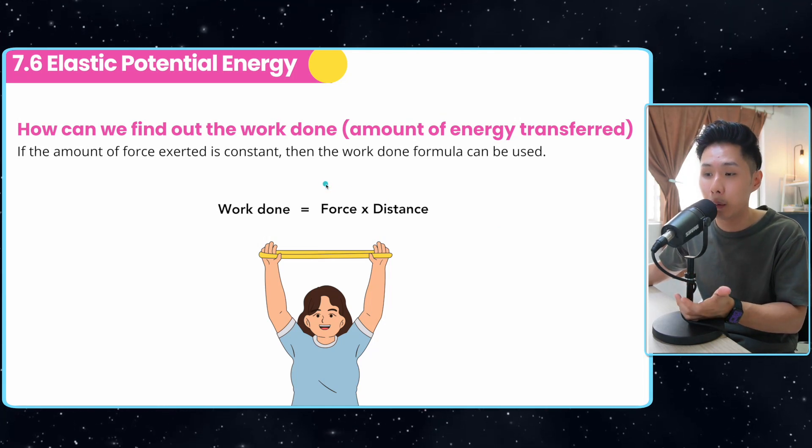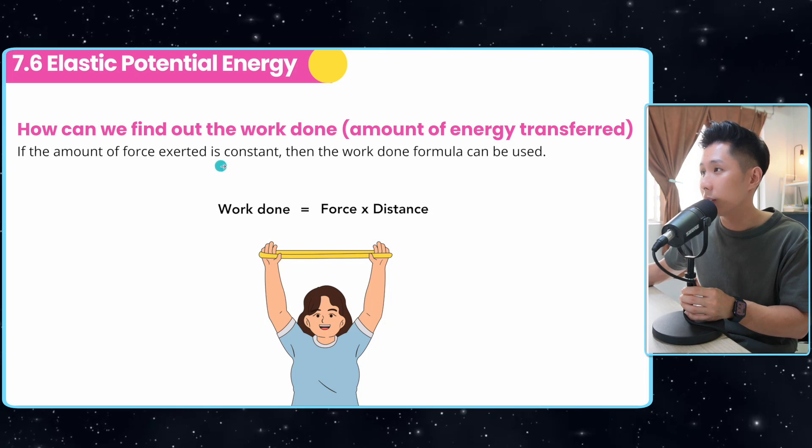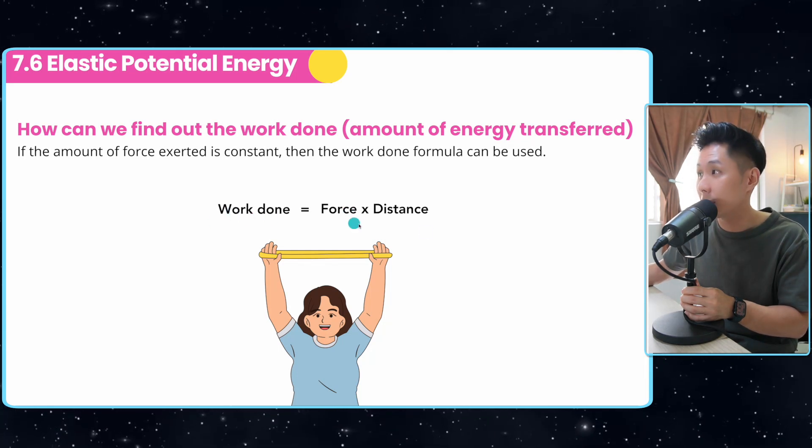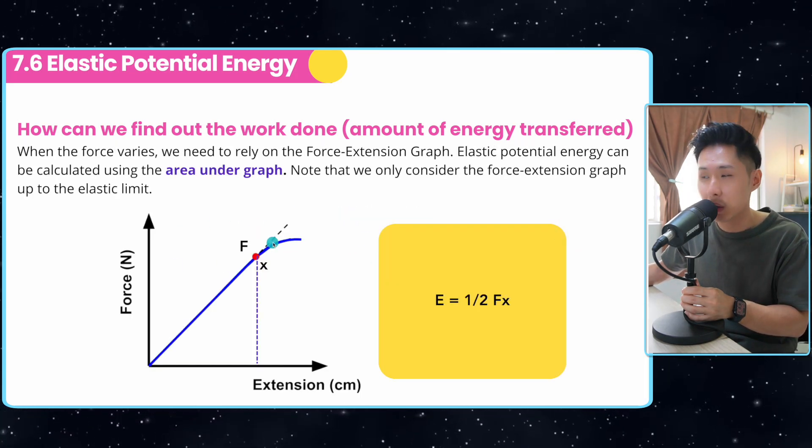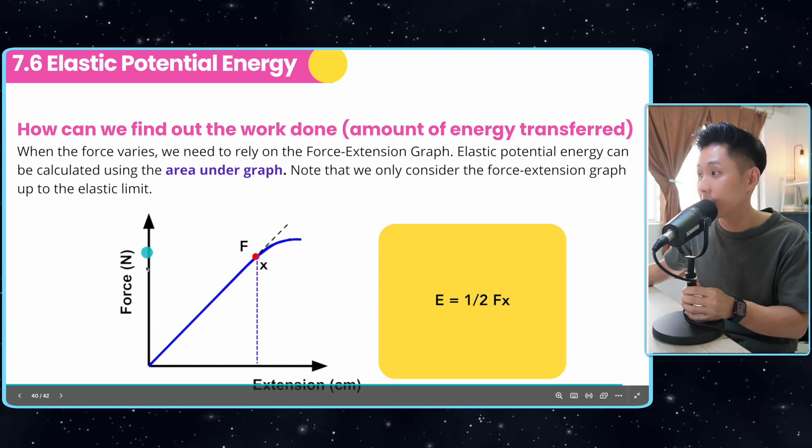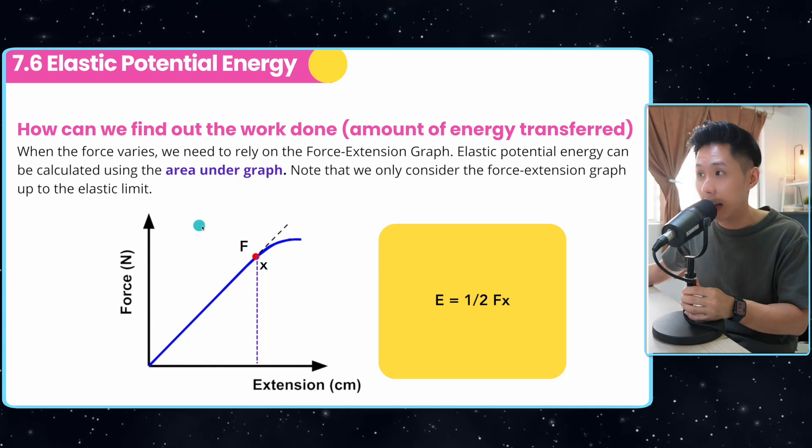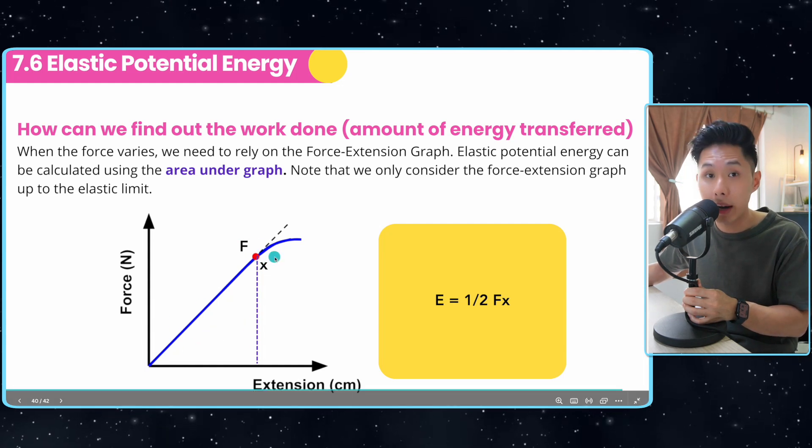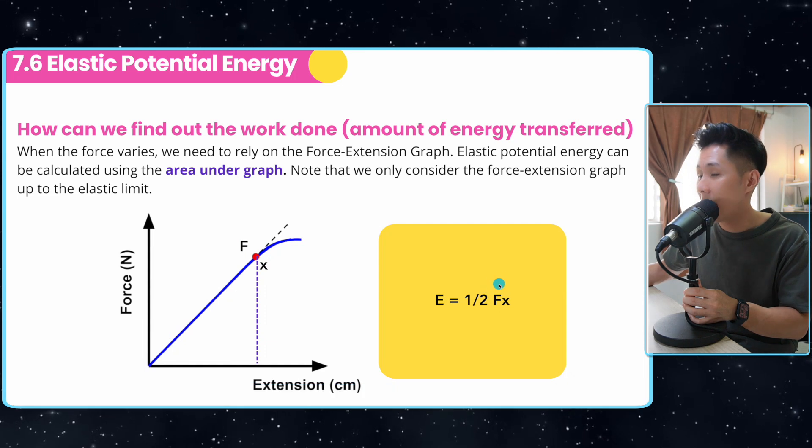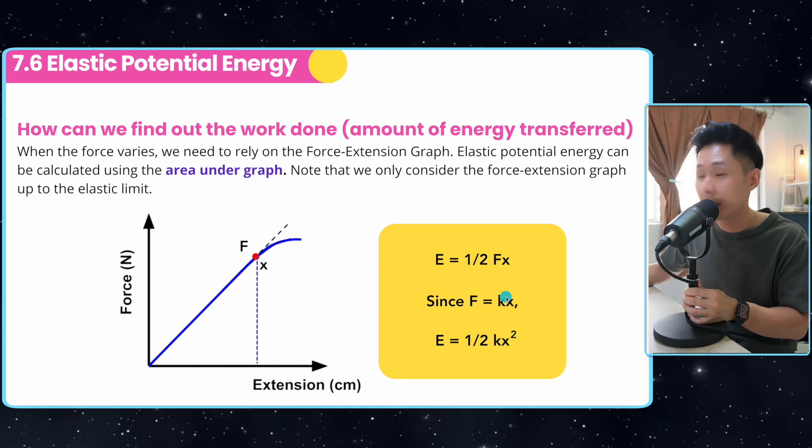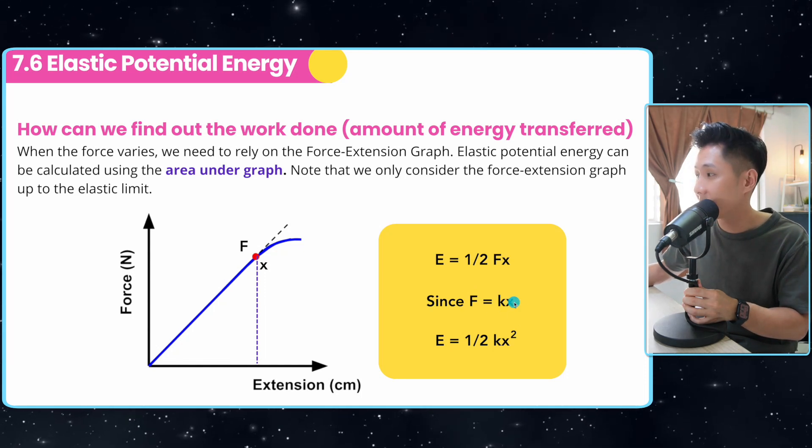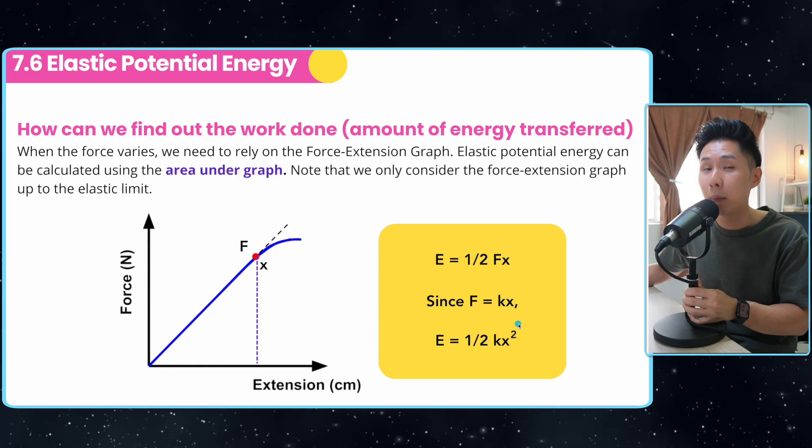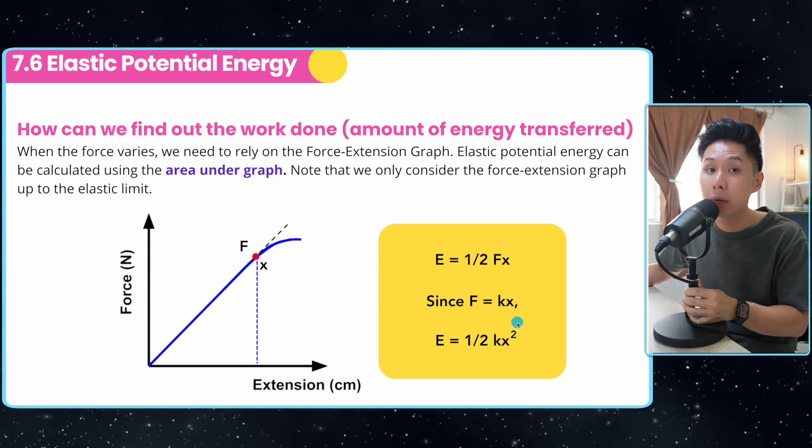How can we find out the amount of energy transferred whenever you work on a spring? If the amount of force exerted is constant, then the work done formula can be used. Work done is energy transfer. It's calculated using force times distance. If you look at this force extension graph here, the distance moved is the extension. The force here is the force applied. Therefore, if you want to find out the work done, the energy transferred in a spring, what you can do is just to calculate the area under this force extension graph. So it's a triangle. I will just use ½ multiplied by F multiplied by x. Because we know that the spring constant formula, k equals F over x, F equals kx, we can substitute F into this formula, which would have given us ½kx². That's how we find out how much energy is being transferred when we compress the spring.